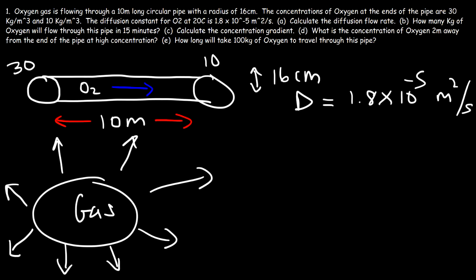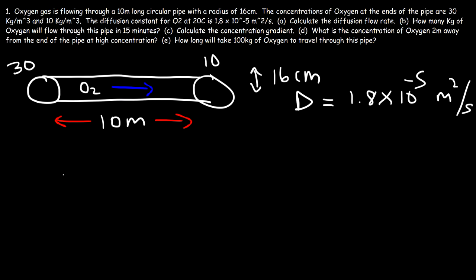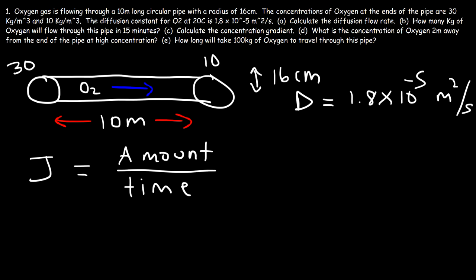So how can we use this information to calculate the diffusion flow rate? The diffusion flow rate, represented by the symbol J, is the amount of material that travels per unit time. The amount of material could be mass in kilograms, moles, or number of molecules — it varies based on the units of concentration. In this case, concentration is mass per volume, which is equivalent to density. So the diffusion flow rate here will be kilograms of oxygen per second.